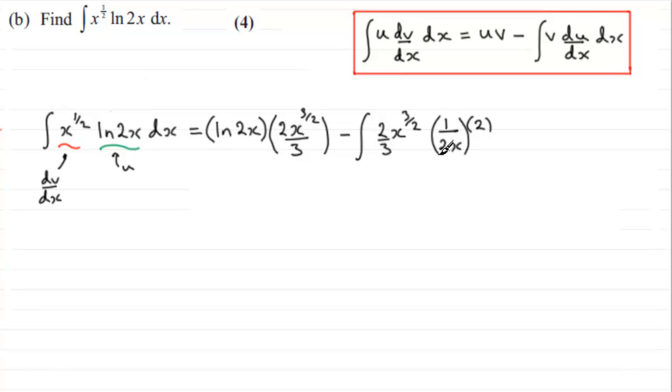So we've got that, we'll put that in brackets. So we've got v then times du dx, and then we integrate all of this with respect to x.